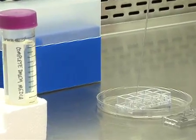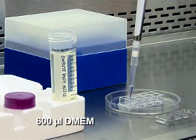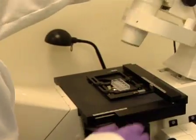After 30 minutes, replace the media on the SNAP cell samples one last time with 600 microliters of complete DMEM. The cells are now ready for imaging using a Zeiss Apotome Axiovert 200M fluorescent microscope.